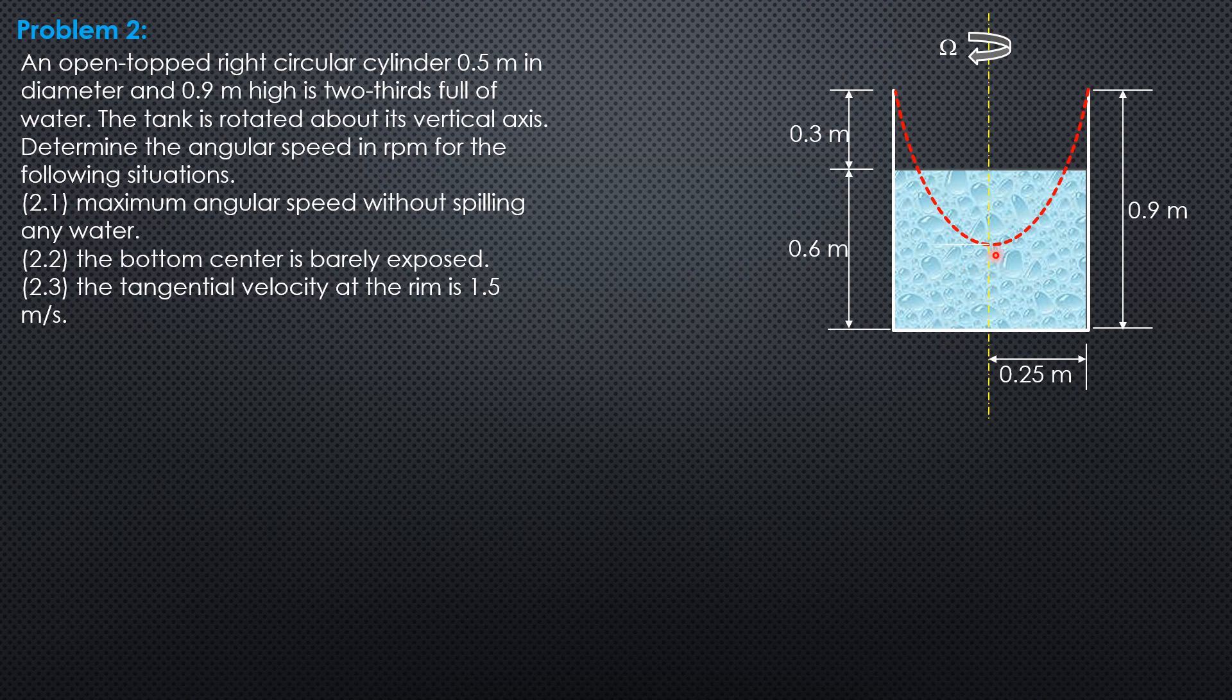So the height h1 would be equal to 2 times 0.3 or 0.6. Then substitute into the formula: h1 equals 0.0005589 omega squared r squared. So 0.6 equals 0.0005589 omega squared in rpm times radius squared, so that we can solve for omega. So this is the maximum angular speed without spilling any water.